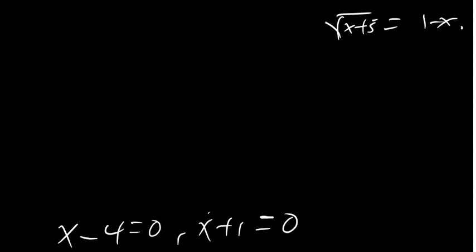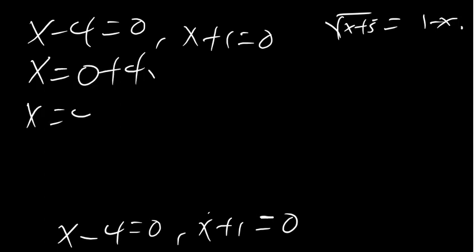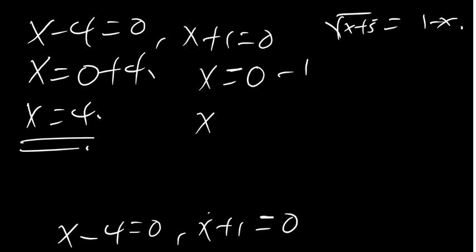Solving each factor: from x minus 4 equals 0, we get x equals 4. From x plus 1 equals 0, we get x equals negative 1. After finding the values, we have to test them in the original equation.